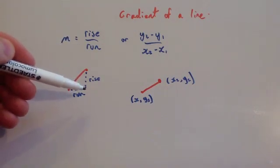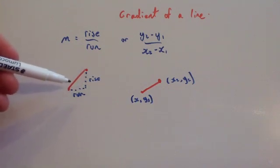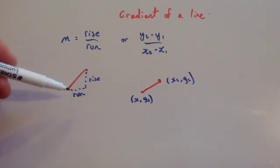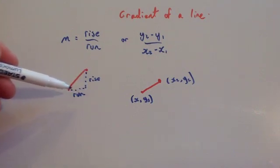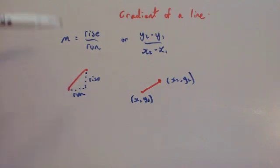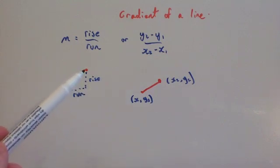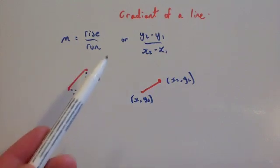In other words, how high up a line goes — if I want to measure how steep this line is, I calculate its rise, how far it's gone up, and I divide it by its run, how far it goes across. So you do the rise divided by the run. Some people call it change in y divided by change in x — the change in y is the rise, and the change in x is the run.